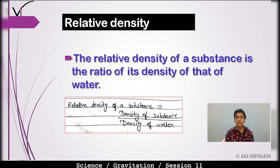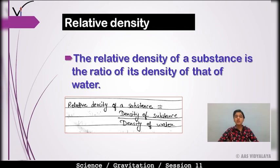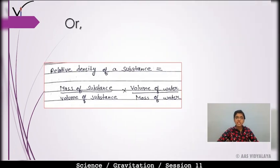Ab baat aati hai relative density ki. Relative density of a substance is the ratio of its density to that of water. Kisi bhi substance ki relative density nikalni hai to us substance ki khud ki density aur water ki density ke beech mein hum ratio find out karte hain. That is: Relative density = density of substance / density of water, which also equals (mass of substance / volume of substance) × (volume of water / mass of water).